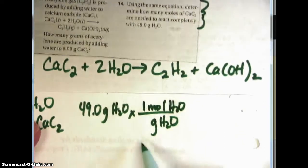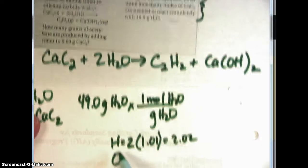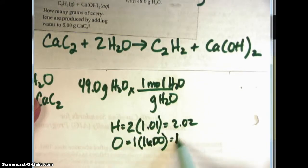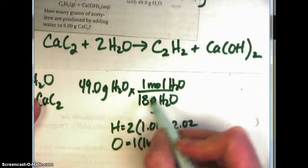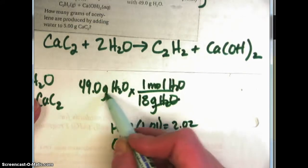So the molar mass of water is going to be two hydrogens which is 1.01 so that's 2.02 plus there's one oxygen. 1 times 16 and that equals 16 and so it's 18.02 grams per one mole. And I put grams on the bottom so that I could cross out grams of H2O.